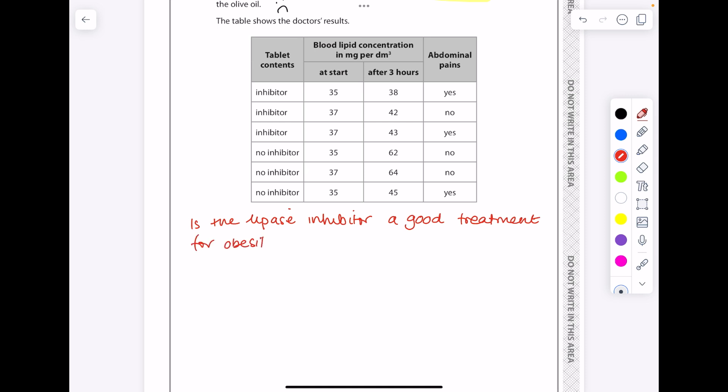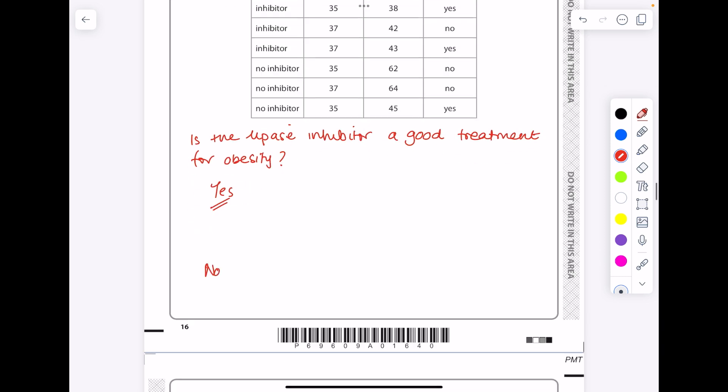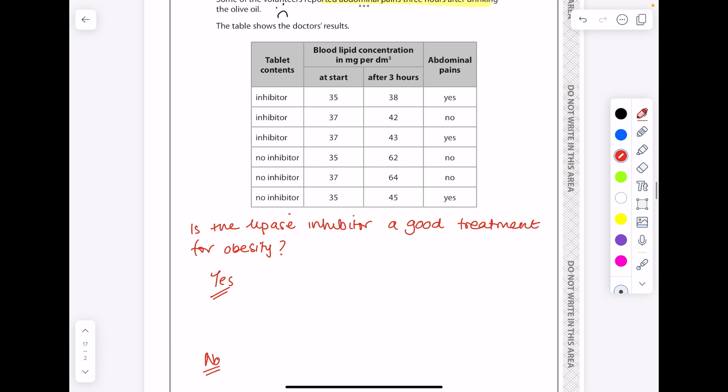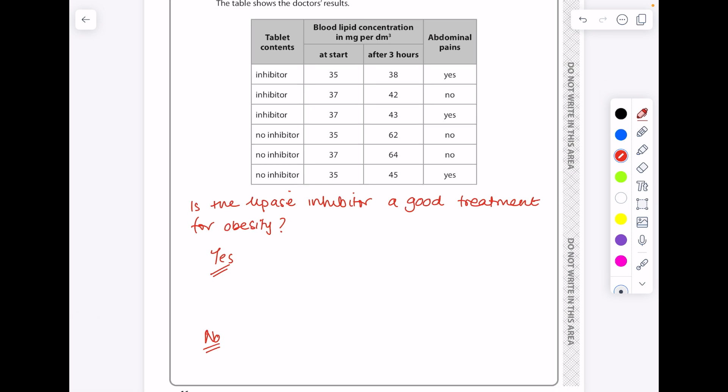That's effectively the question we're being asked. Reasons as to why we think yes and reasons as to why we think no. Looking at the data we can see, yeah, points supporting the use of the lipase inhibitor is that there's lower blood lipid concentration with use of inhibitor, so that means less fat is likely to be absorbed and less fat deposited around the body. So you're going to lower your risk of obesity.